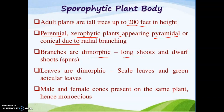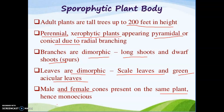Likewise, branches, leaves are also dimorphic — scale leaves and green leaves. These green leaves are also termed photosynthetic leaves because of the presence of chlorophyll. Male and female cones are present on the same plant, that is why it is known as a monoecious species or monoecious plant.